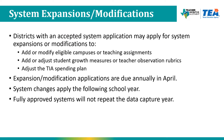In the years following their initial accepted system application, districts can apply to expand or modify their system. Districts may decide to add or modify their eligible campuses or teaching assignments, add or adjust their student growth measures or teacher observation rubrics, or make adjustments to their TIA spending plan. Applications for expanding and modifying the system are due annually in April. System changes will take effect the following school year, and fully approved systems will not be required to repeat their data capture year.